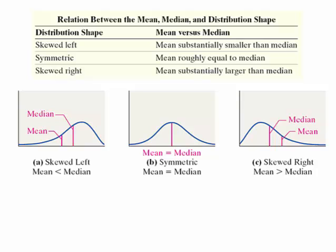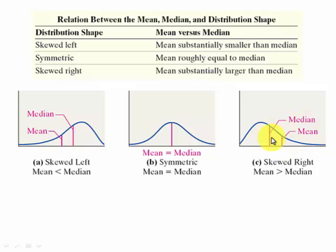Let's look at some shapes and see the relationship between mean and median. If a data set is skewed left, the mean will be smaller than the median, because the smaller values on the left tail have a bigger effect on the mean. If the data set is symmetric, the mean and median are most likely equal. If skewed right, the larger values on the tail affect the mean more than the median, so the mean will be larger than the median.